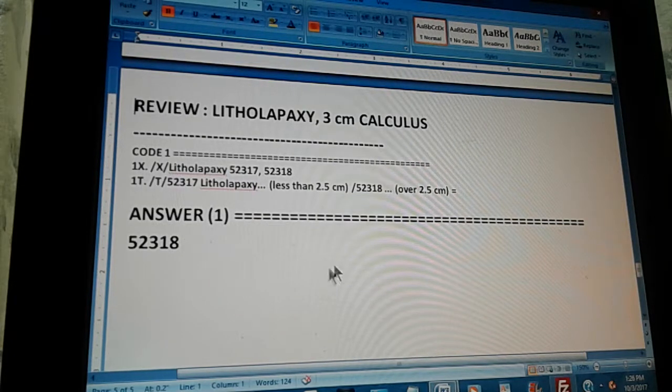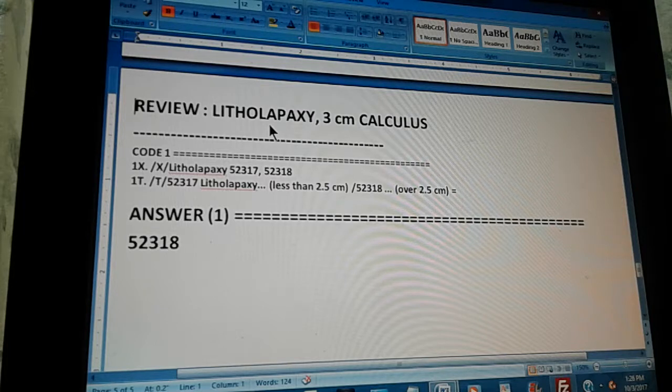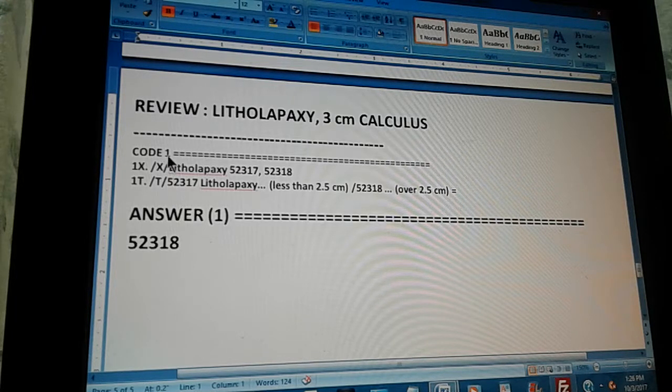This is the summary of the problem. This is the review section of our book. It's a litholapaxy three centimeter calculus, which means that it's a stone that has a diameter of three centimeters, and we're going to crush it and flush it out. So, there's only one code.